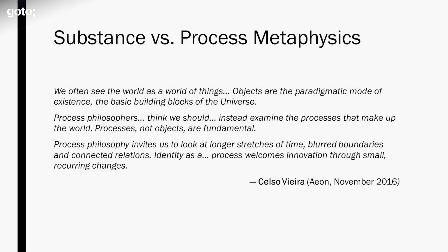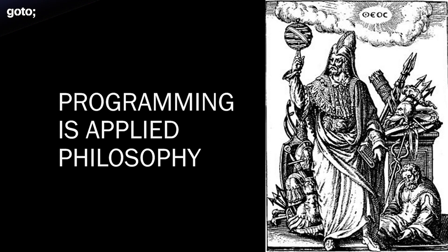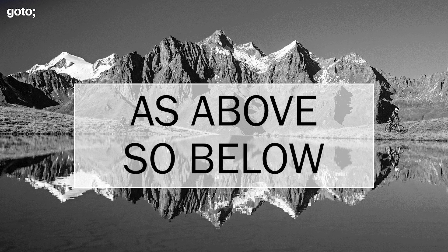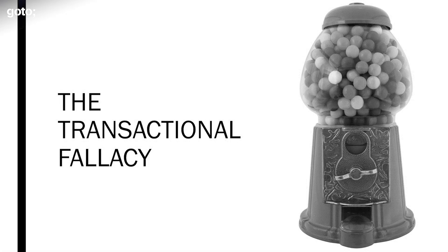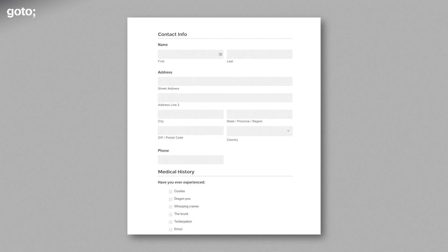The transactional fallacy occurs every time we try to model a process as if it were a transaction. And whether it crops up in code or in life, it's fundamentally a philosophical problem. In fact, this is a known point of division among philosophers. As Kelso Vieira writes, we often see the world as a world of things or objects. But process philosophers think processes, not objects, are fundamental. I happen to believe that software and philosophy are inextricably tangled up. Writing software is the practice of applied philosophy. We use code as a way to reflect our understanding of the world. And our ways of modeling the world in turn influence our perception of reality. You can't do this stuff 40 hours a week without it affecting how you think. Once you start identifying it, the transactional fallacy is everywhere in software. For instance, I see it all the time with forms.